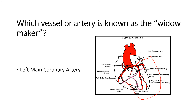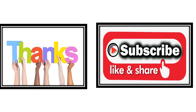The left circumflex artery supplies the left atrium, anterolateral and posterolateral walls of the left ventricle, and also the posterior wall of the left ventricle. This completes the overview of the circulation of the left and right coronary arteries.